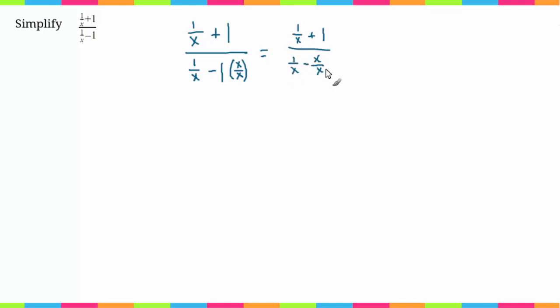Let's rewrite it now: 1 over x plus 1 over, 1 over x minus x over x. Now that I have this common denominator, I can combine the numerators. So I'm going to have 1 over x plus 1 over, 1 minus x over x. Now I'm going to multiply this by x over 1 to get rid of the denominator.